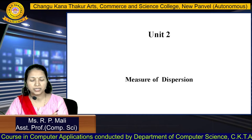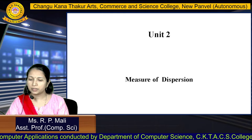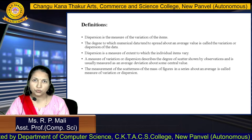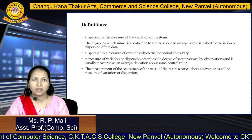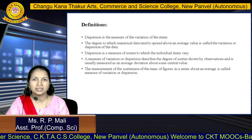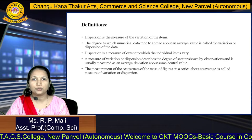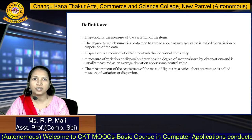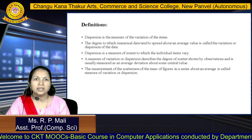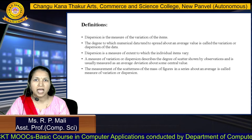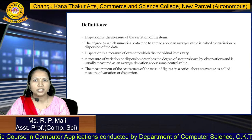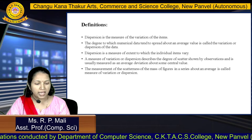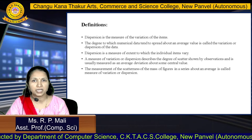Hello friends, today we are going to see unit number 2 on measures of dispersion. Dispersion is a measure of the variation of the items. The degree to which numerical data tends to spread above an average value is called variation and dispersion. It is a measure of the extent to which individual items vary, describing the degree of scatter shown by observations, usually measured as an average deviation above some central value.